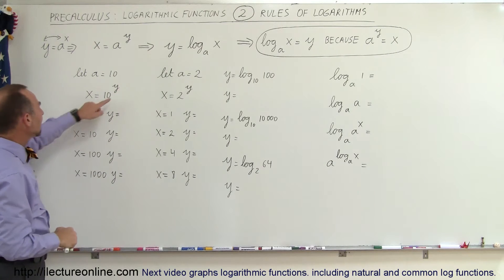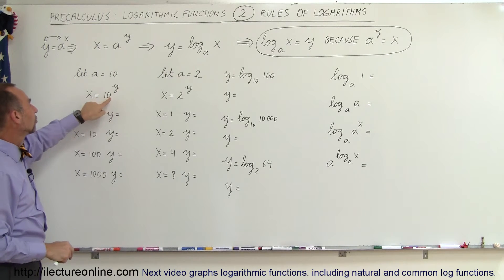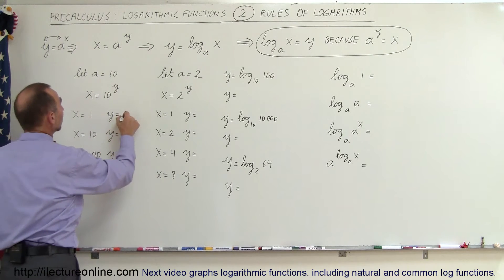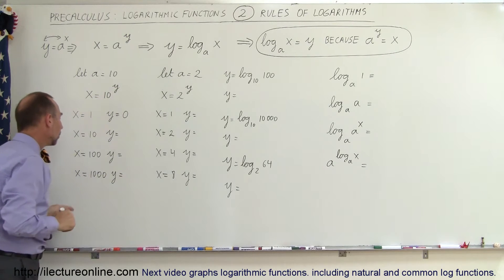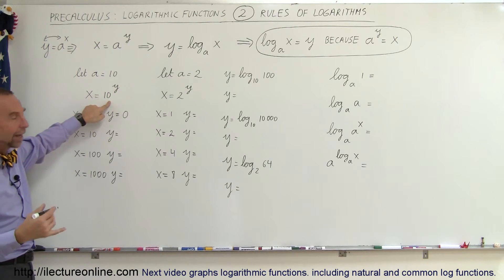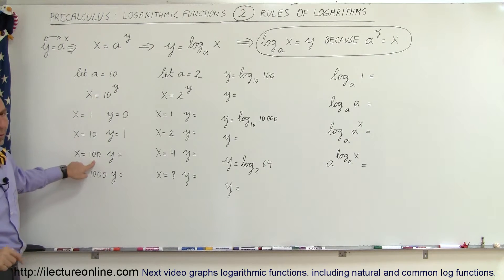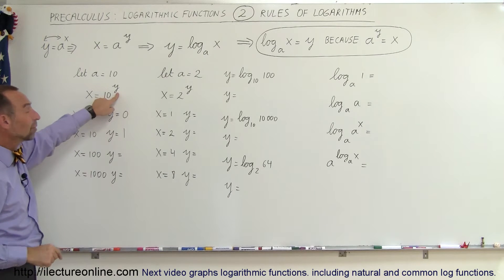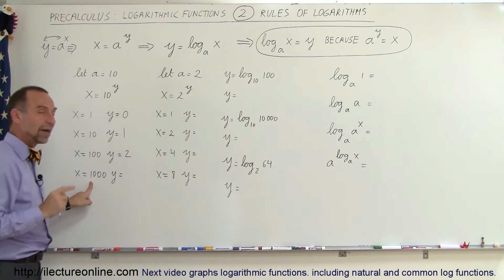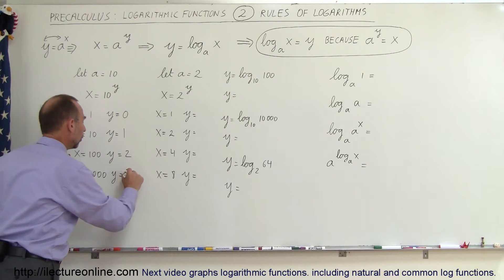What is y equal to when x equals 1? We need an exponent such that 10 to the y equals 1. The answer is y equals 0, because 10 to the 0 power gives 1. What if x equals 10? Then y equals 1, because 10 to the first power equals 10. What if x equals 100? Then y equals 2, because 10 to the second power equals 100. And if x equals 1000, then y equals 3, because 10 to the third power equals 1000.